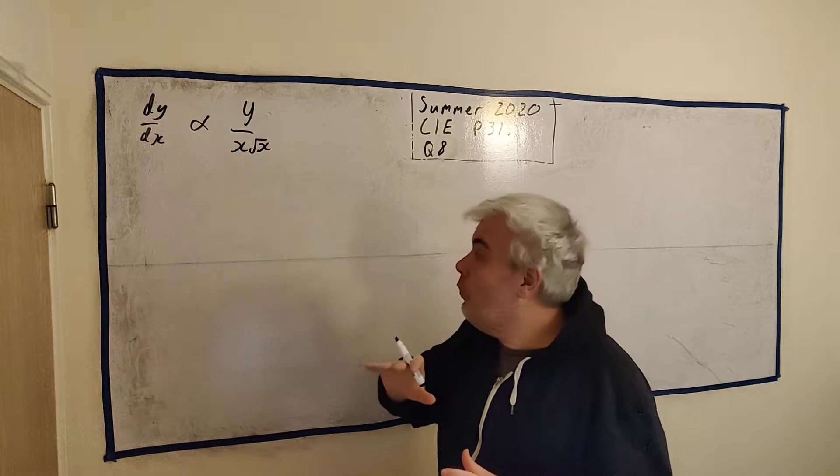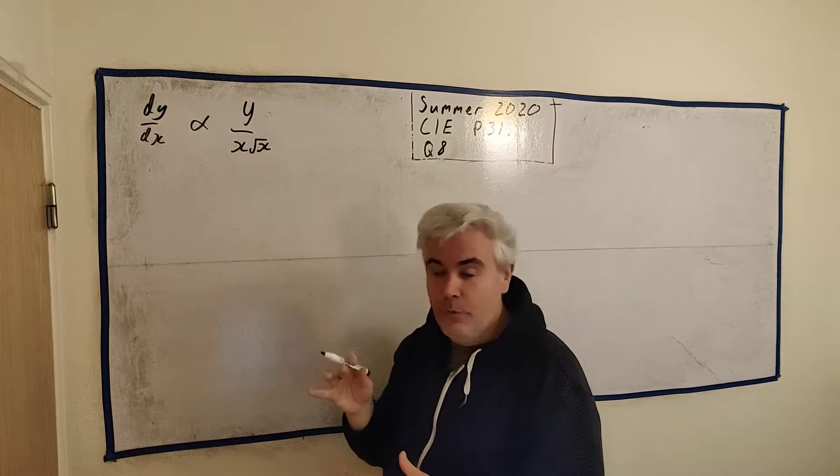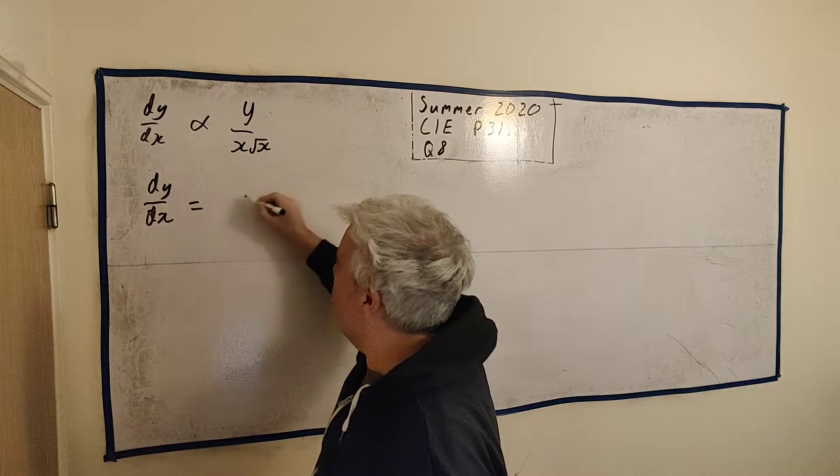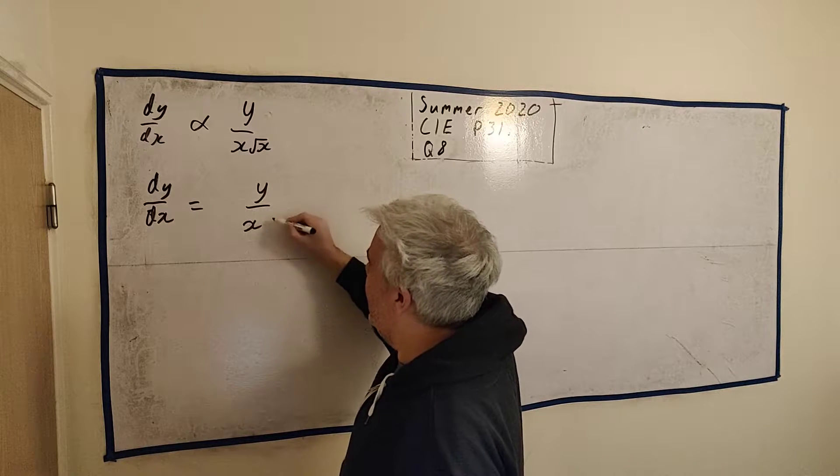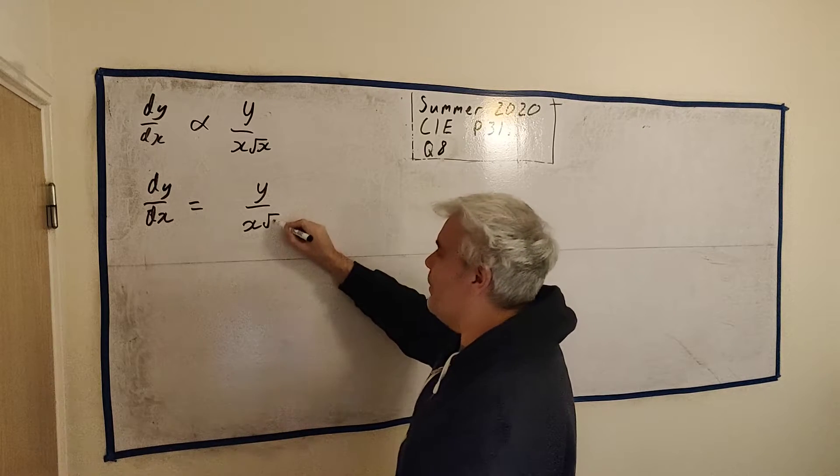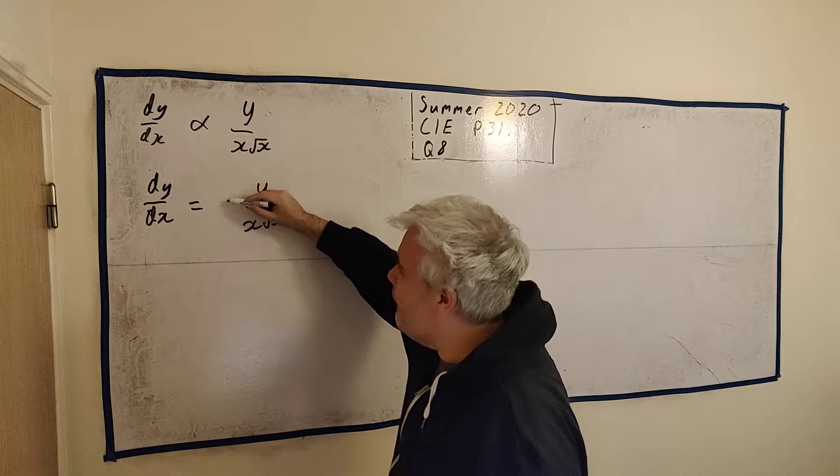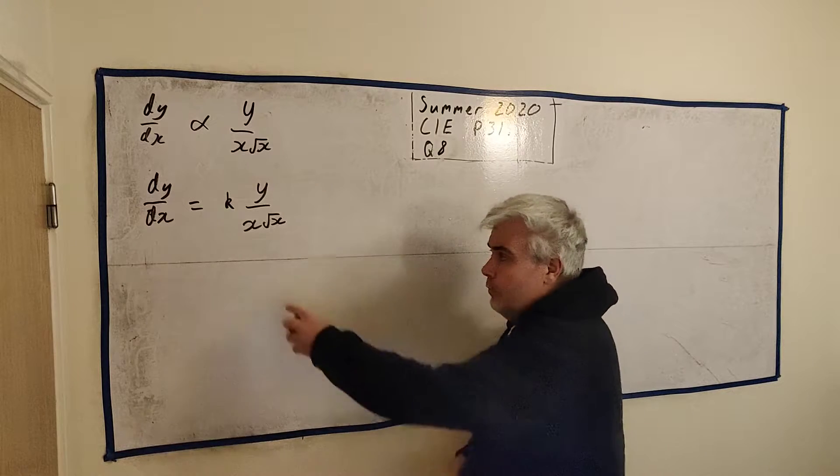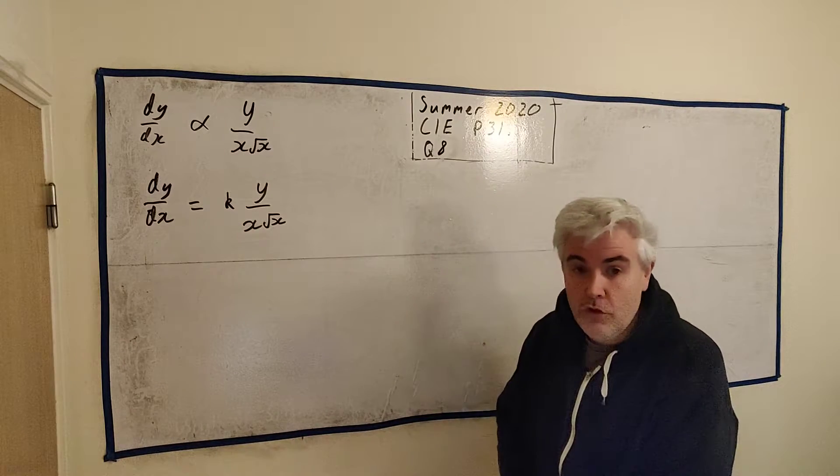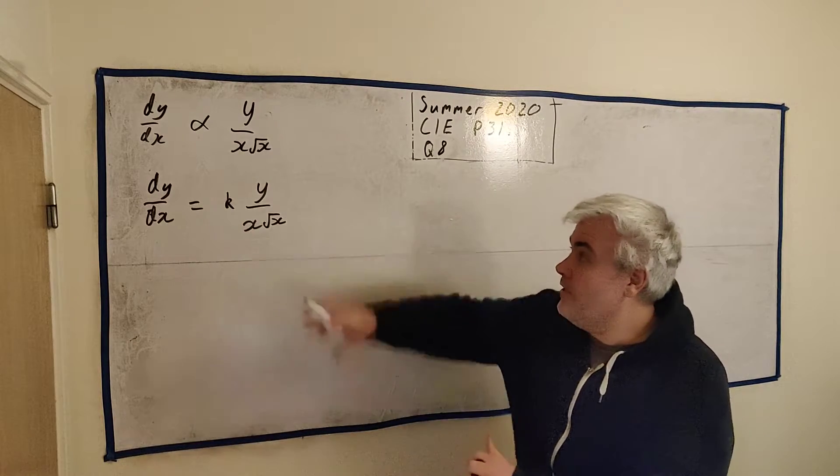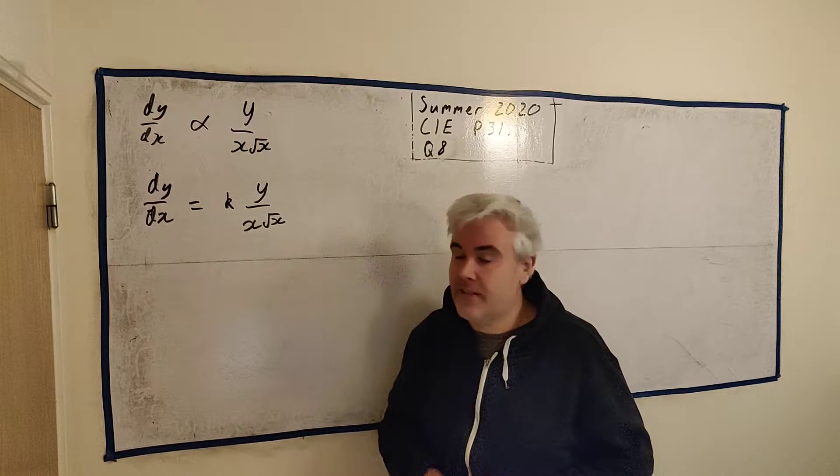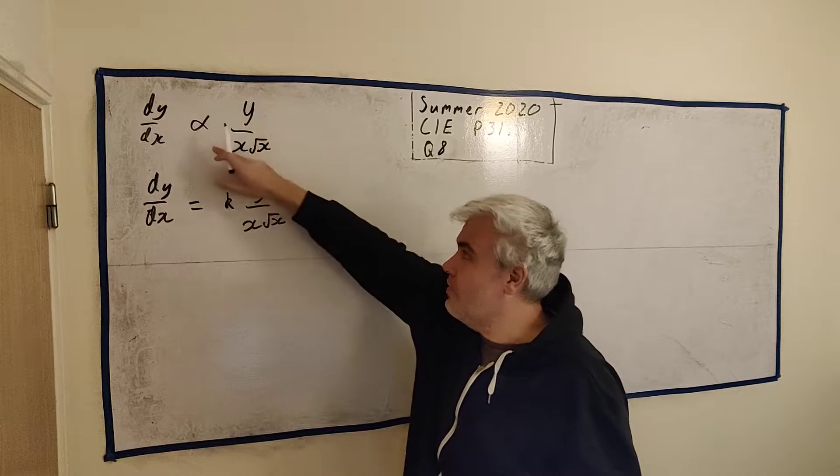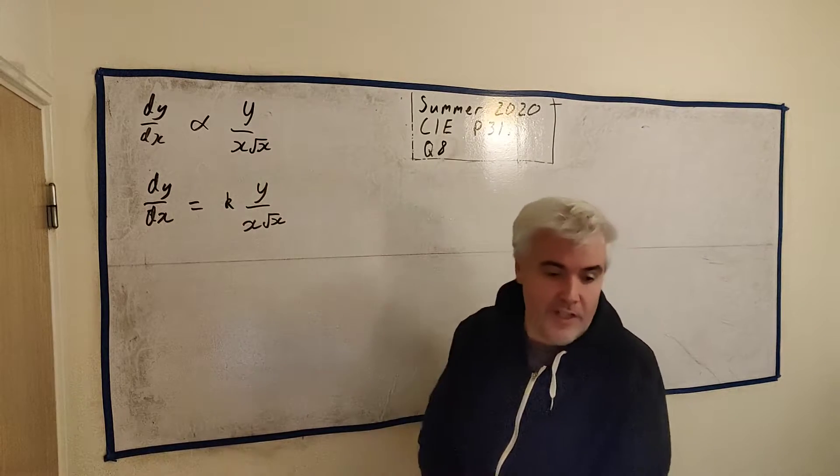And then what we can do with this is, we can turn this into an equals. We can change this so it's dy/dx is equal to y over x multiplied by the square root of x. Once we multiply it by some sort of constant. And we can name that anything you want, but I'll just go with k. It's usually what we use. So that's got us from that bit of English they said, to this equation here.